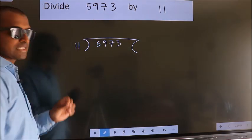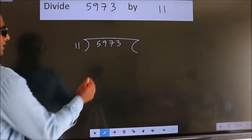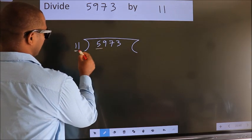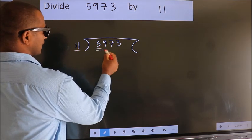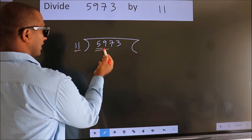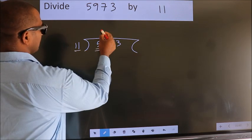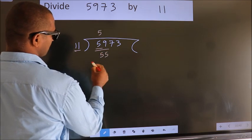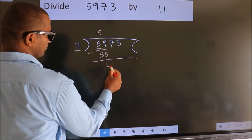This is your step 1. Next, here we have 5. Here 11. 5 is smaller than 11, so we should take two numbers: 59. A number close to 59 in the 11 table is 11 fives, 55. Now we should subtract. We get 4.